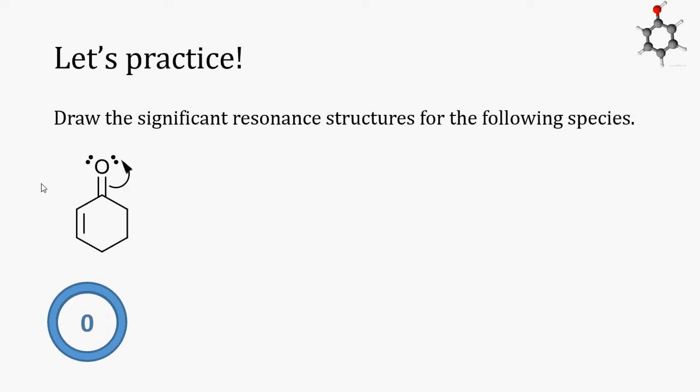We can draw an arrow that shows us taking the pair of electrons in the carbon-oxygen pi bond and using it to form a new lone pair on oxygen. The oxygen has a negative charge and the carbon is left with a positive charge.